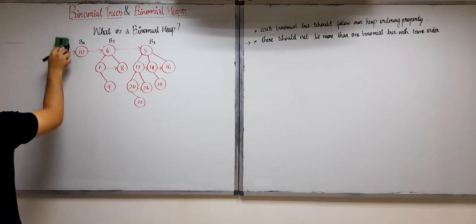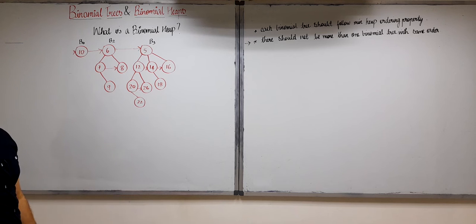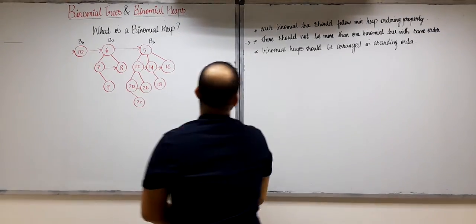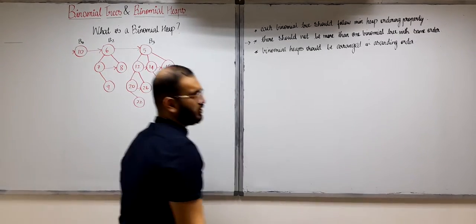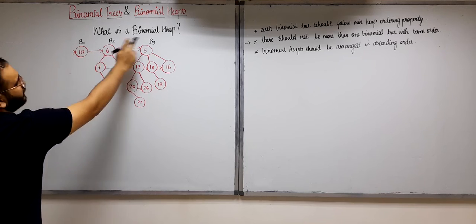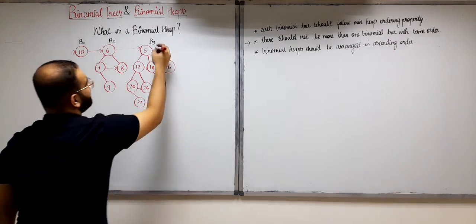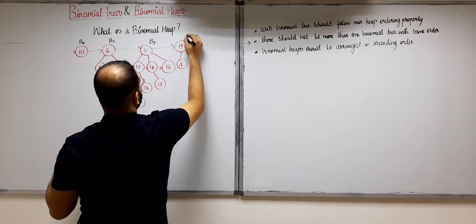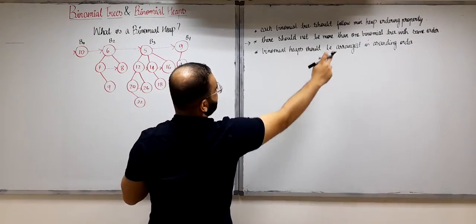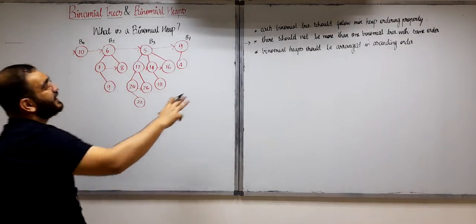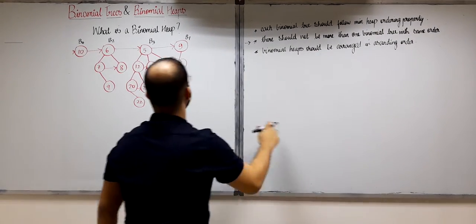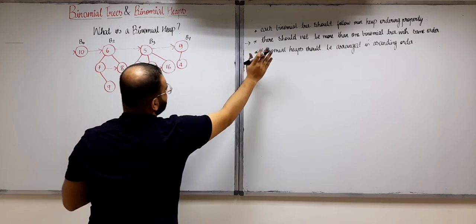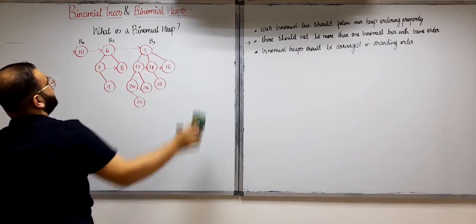So this is not a binomial heap. Let us make it a binomial heap again. It can happen that we don't have a binomial tree of a particular order — for example, there is no B1 here. The third and final condition is that the binomial trees should be arranged in ascending order of their order. If I draw B1 over here, it is not violating the second property, but it is violating the third property which says binomial trees should be arranged in ascending order.